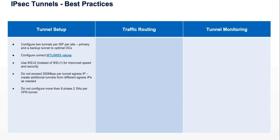On routers, make sure that you don't have more than eight phase two SAs per VPN tunnel, otherwise it creates routing overhead. A new SA is created for every ACL that you apply to the tunnel. So rather than having a lot of ACLs, create one ACL with all your includes and one ACL with all your excludes, and apply that towards the IPSec tunnel to reduce the number of phase two SAs that you generate.